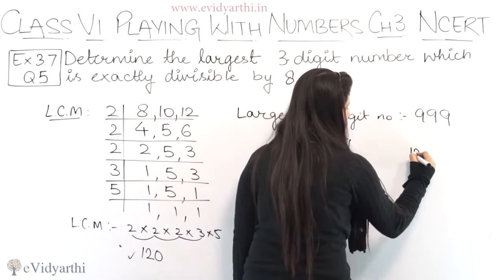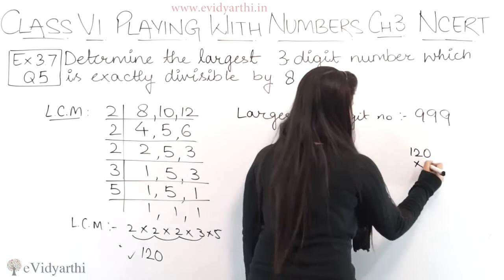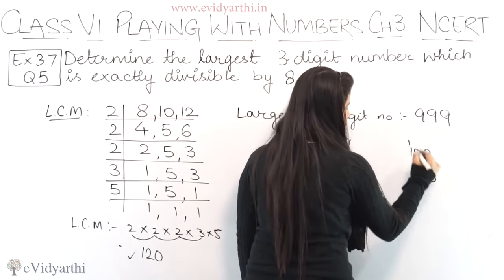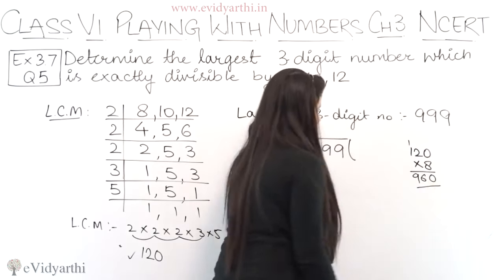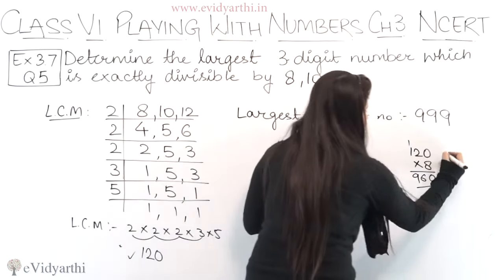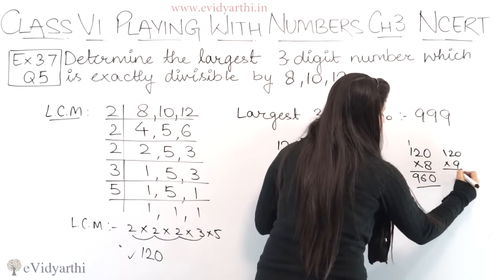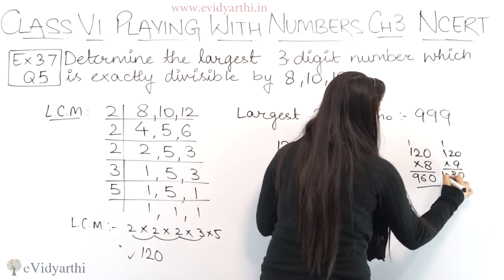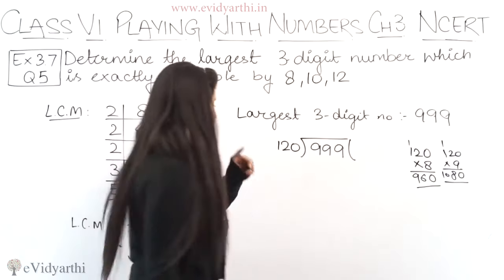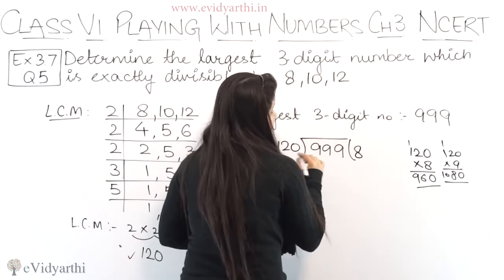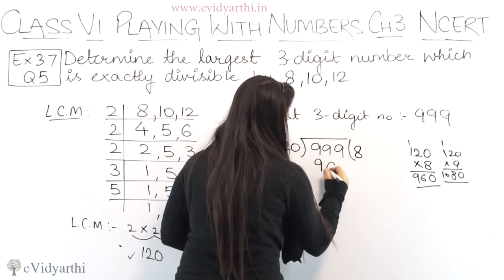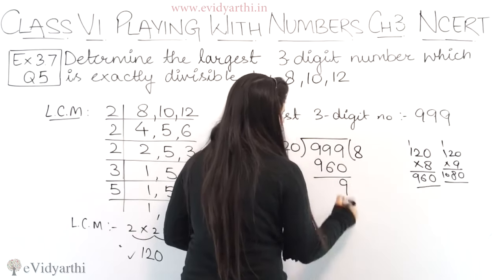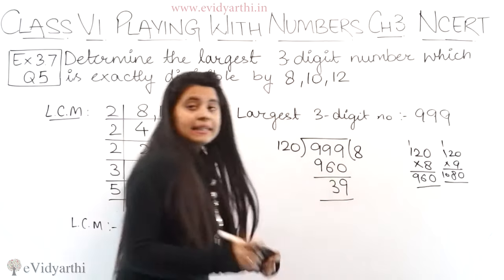Let's start the multiplication. 120 into 8: 8 × 0 is 0, 8 × 2 is 16, 8 × 1 is 8 plus 1 is 9 — so 120 × 8 gives us 960. And if we try 120 × 9: 9 × 0 is 0, 9 × 2 is 18, 9 × 1 is 9 plus 1 is 10 — so that becomes 1080, which is too big. So we take 960. The remainder is 999 minus 960: 9 minus 0 is 9, 9 minus 6 is 3, so the remainder is 39.